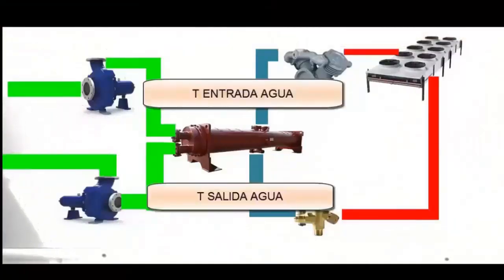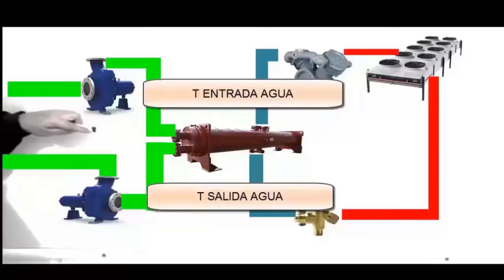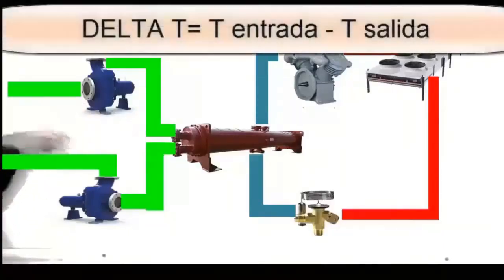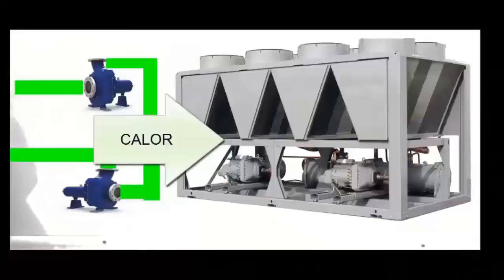This temperature differential is a crucial indicator of the system's efficiency and is especially relevant in air conditioning applications, where the delta T is usually about 5 degrees Celsius or 10 degrees Fahrenheit. A higher delta T indicates greater efficiency in the heat transfer process.